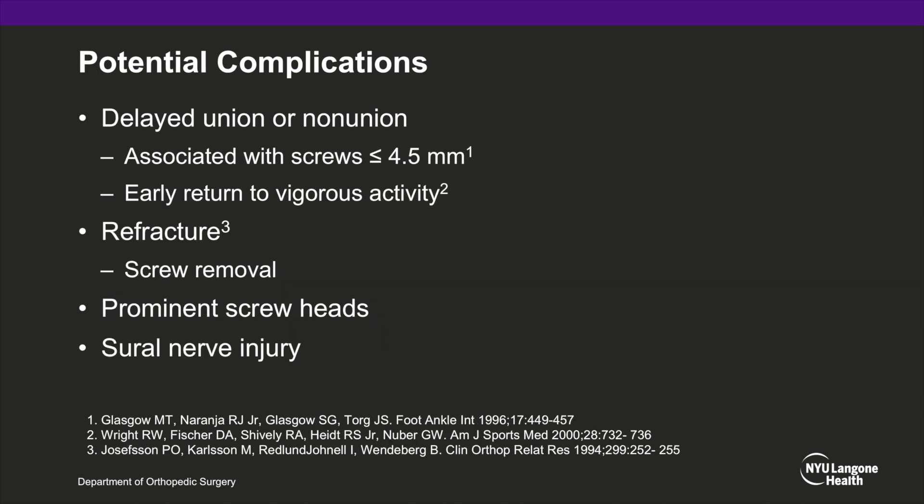The four most common complications following surgery to repair the proximal 5th metatarsal are delayed union or nonunion, refracture, prominent screw head, and sural nerve injury. Delayed union or nonunion may be associated with screw placement less than 4.5 mm in diameter or too early return to sport. Refracture may be associated with early screw removal, and it is suggested that the screw remain in place until the end of the patient's athletic career.